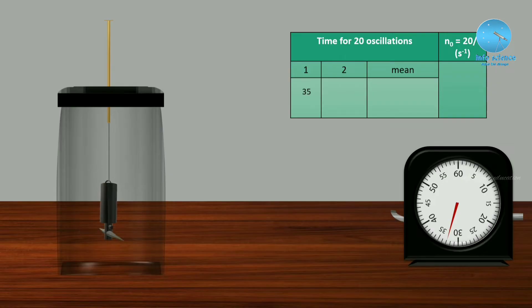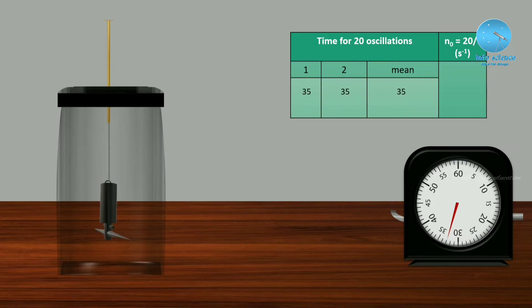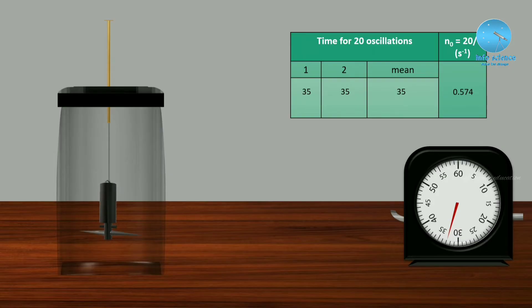This is the first trial. We take the mean value: mean T is 35 seconds. The inverse of the time period gives the frequency. The value of N₀ is 0.574 per second. This completes Step 1: finding the frequency of oscillation in the earth field alone.